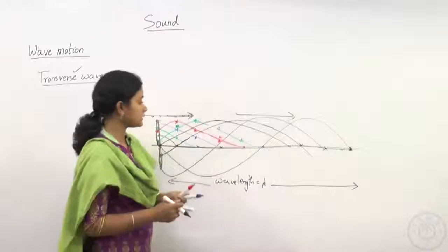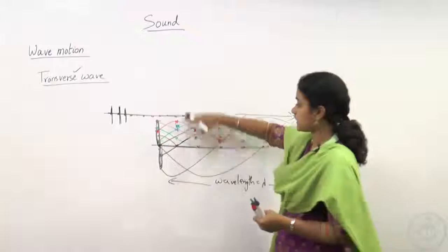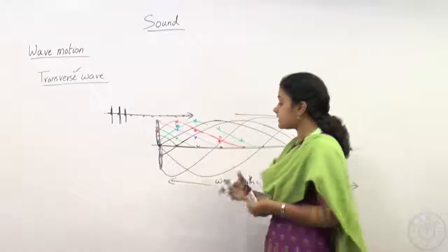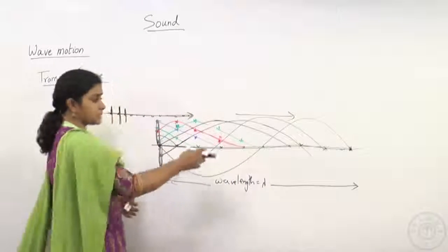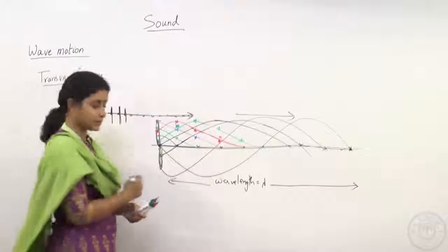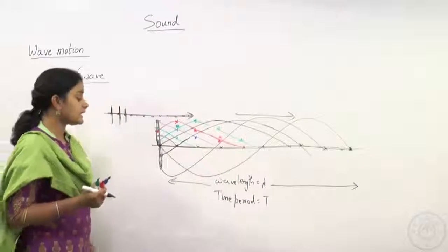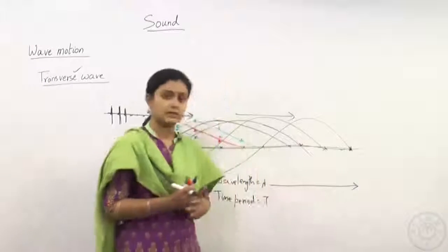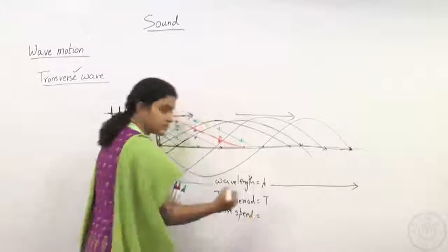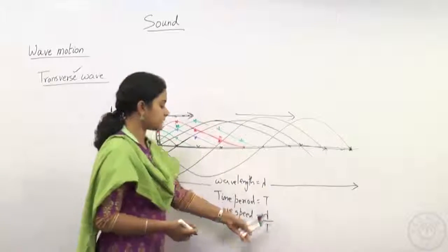We have learned that wavelength λ is the distance moved by the disturbance in one complete oscillation of a particle. The time taken for a particle to complete one oscillation is called the time period, denoted by T. So in T seconds, the disturbance travels a distance of λ. Therefore, the wave speed V equals distance divided by time, which gives V = λ/T.